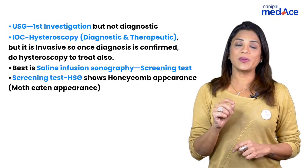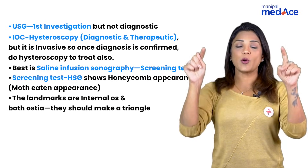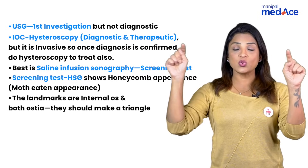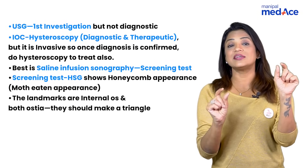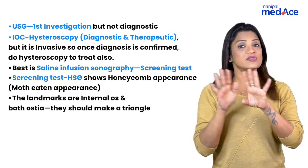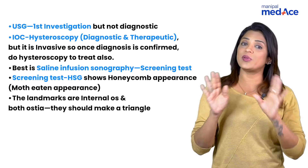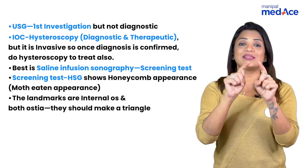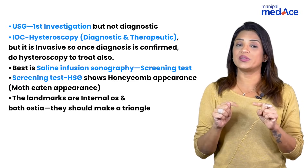In hysteroscopy, you will not get the proper triangle which is formed between the two ostia and the internal os. Because of the adhesions and the obliterated cavity, that triangle will not be there.